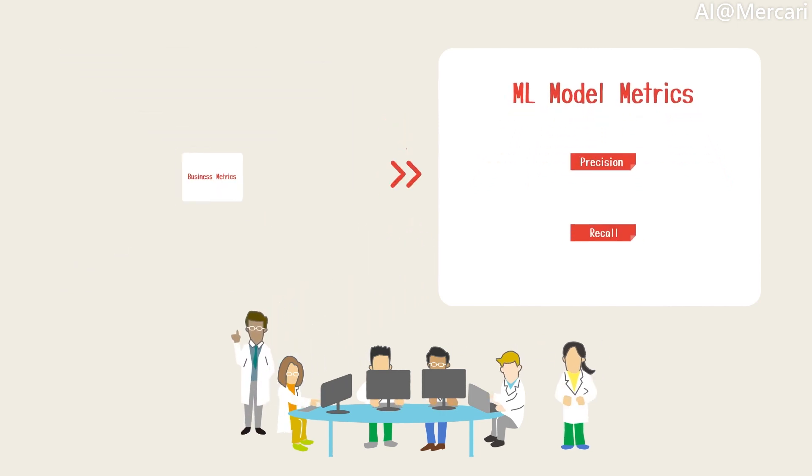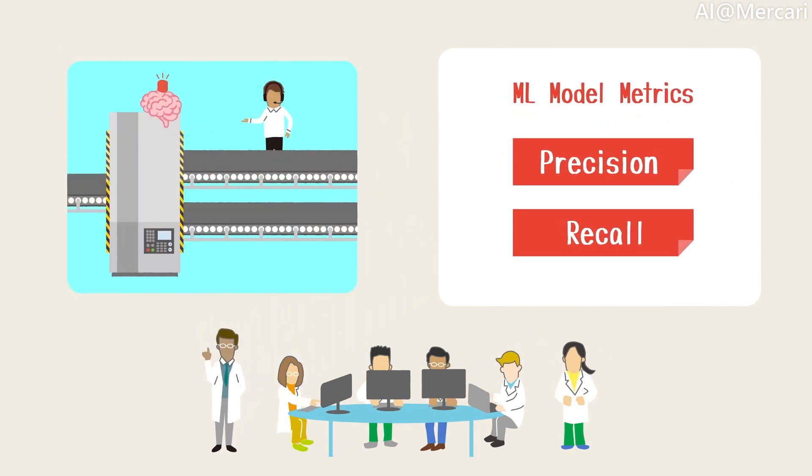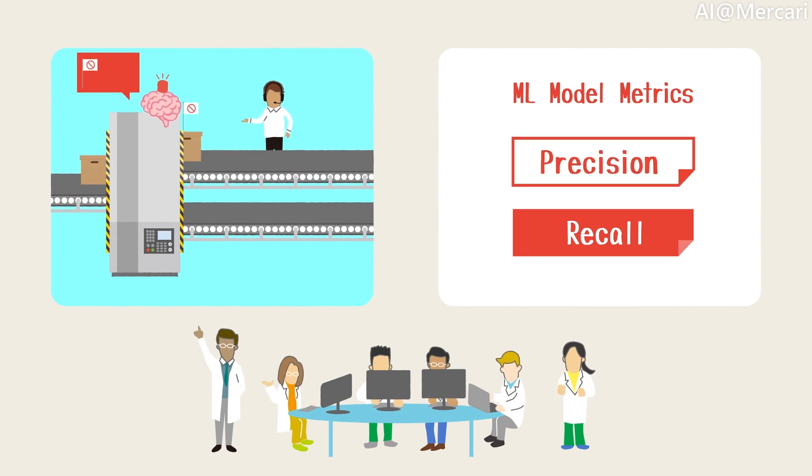In our case, the model metrics consist of precision and recall. Precision is the number of items that are flagged by CS operators divided by the total number of alerts sent to them.